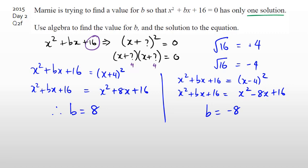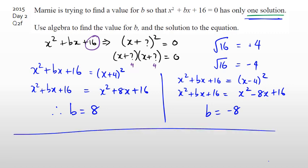Both B equals 8 and B equals negative 8 give one solution. You need to write something like: 'For one solution, it has to be a perfect square,' and then prove your answer after that.